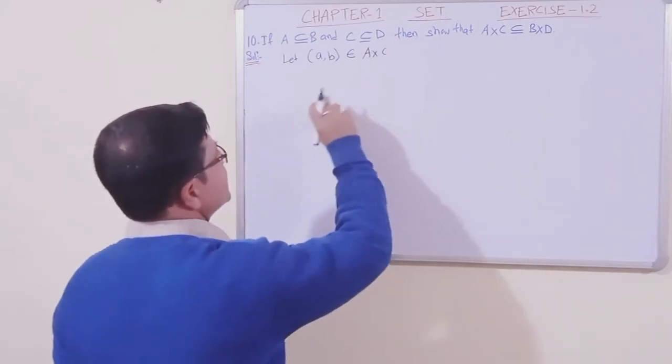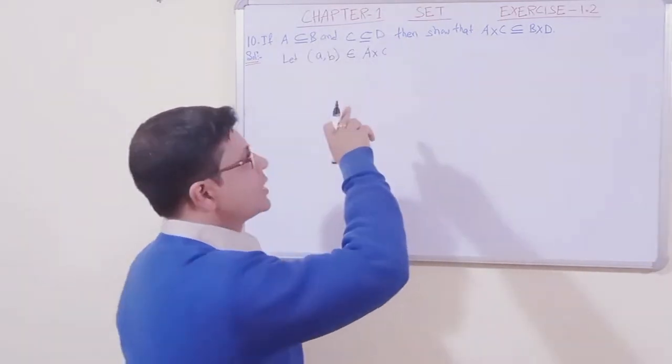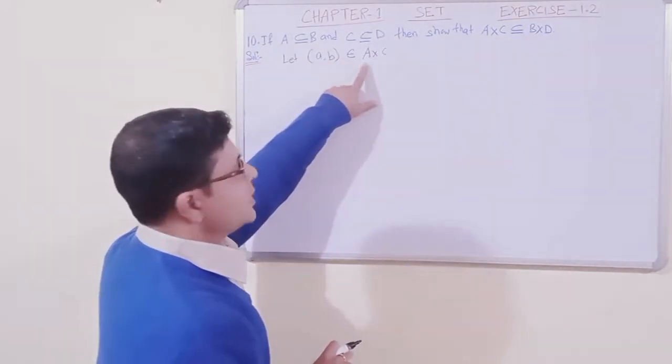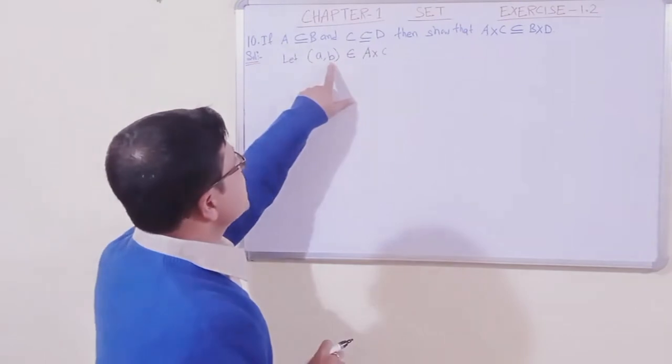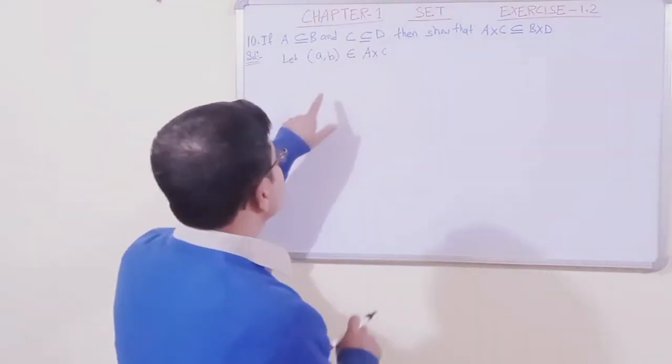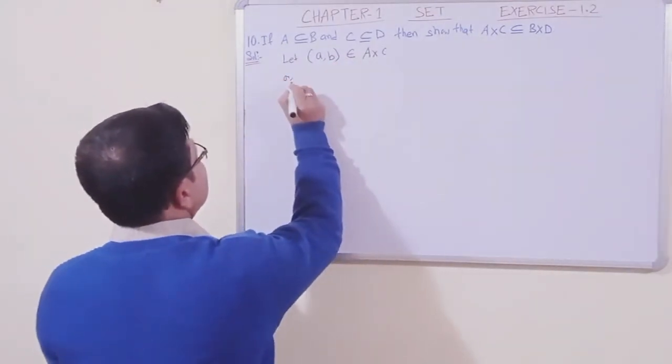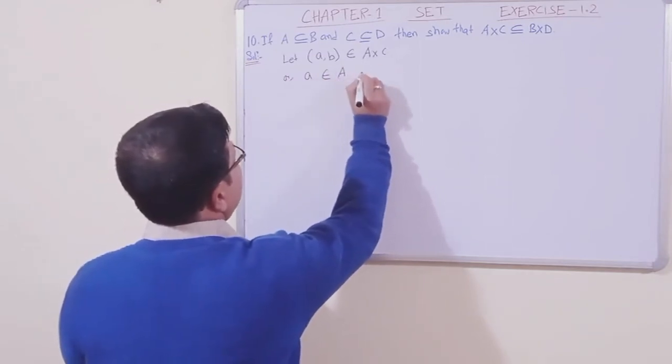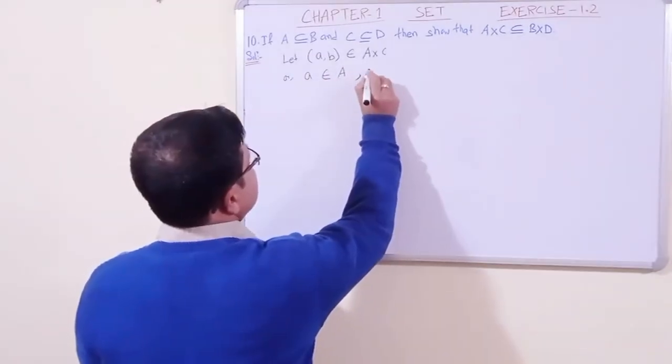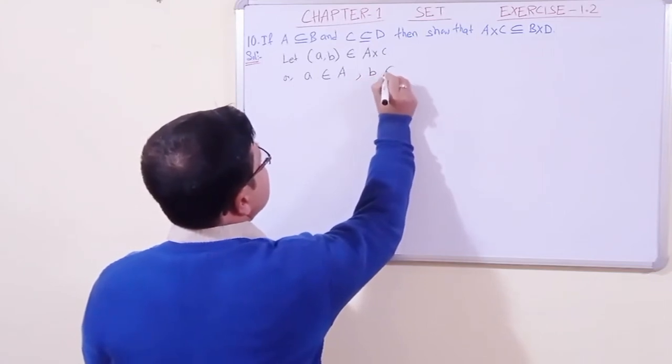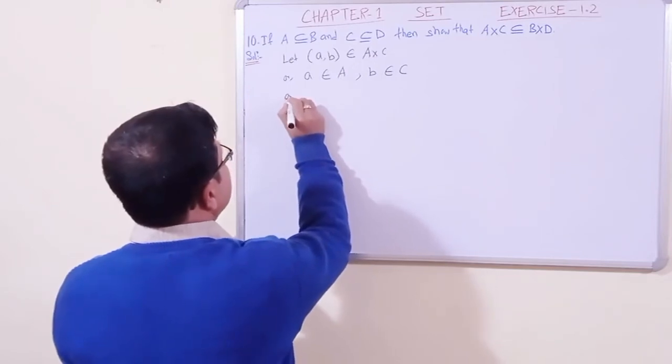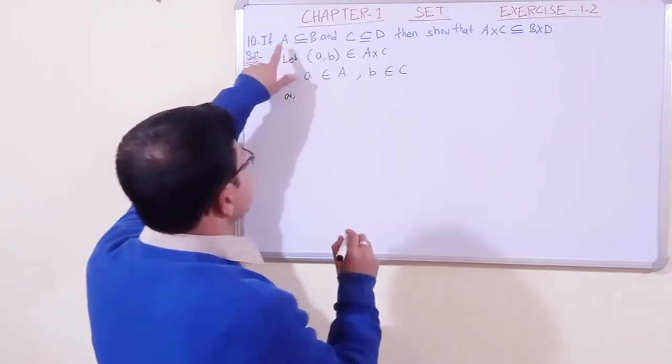A×C is a Cartesian product. We know that a is a coordinate of this, and b is a coordinate of C. So from here, what can we write? a belongs to the first set A, and b belongs to this set C.